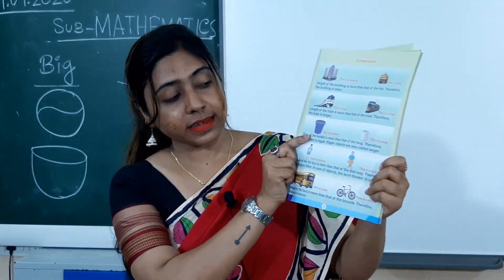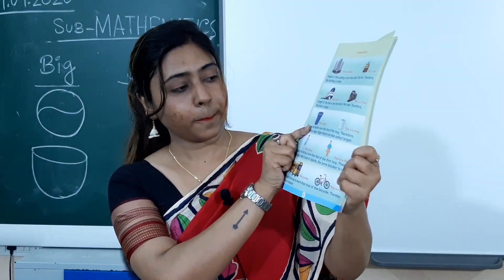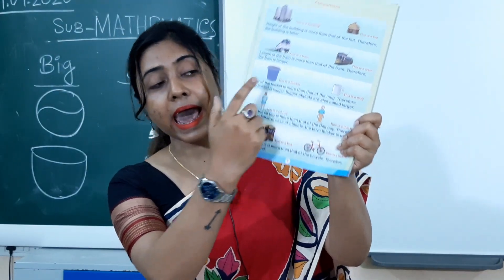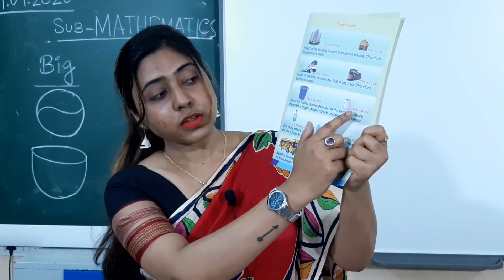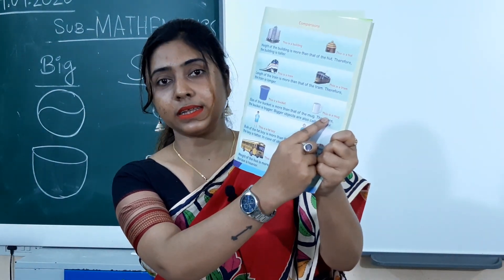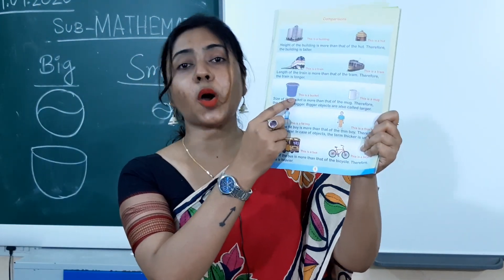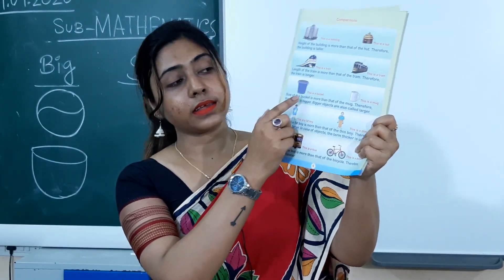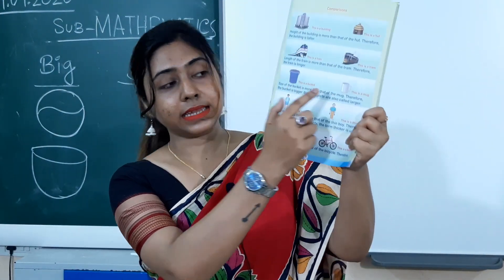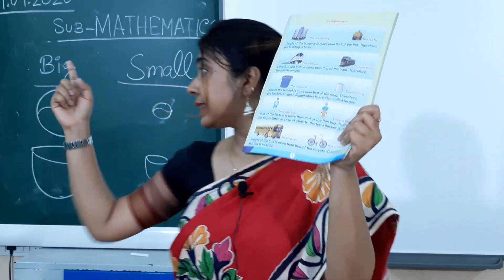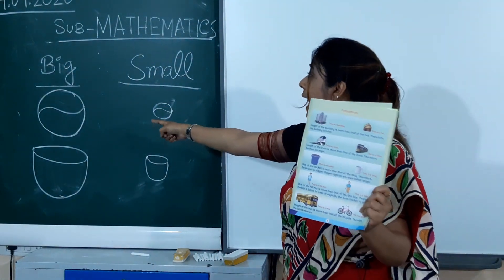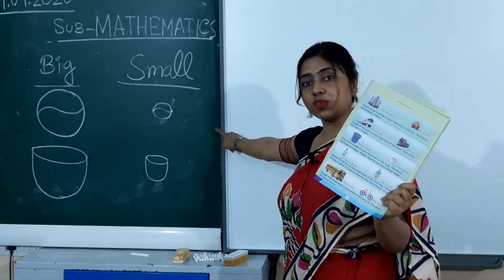This is a bucket — it is big — and this is a small mug. So we can easily compare these two. This is big and this is small.